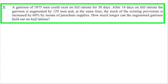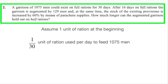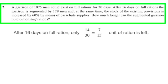We are required to calculate the days the rations could last if all the men were to subsist on half rations instead from now on. To do this, let's assume that we start off with one full unit of ration. We know that 1 thirtieth of the ration would be depleted each day if we are feeding 1,075 men. After 16 days on full ration, only 7/15 units of ration was left.